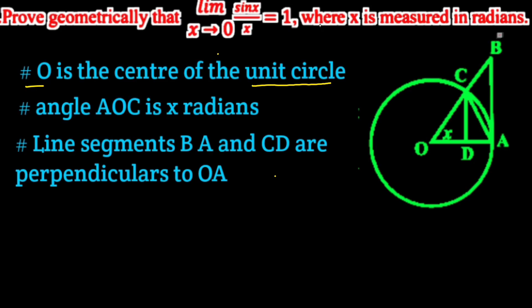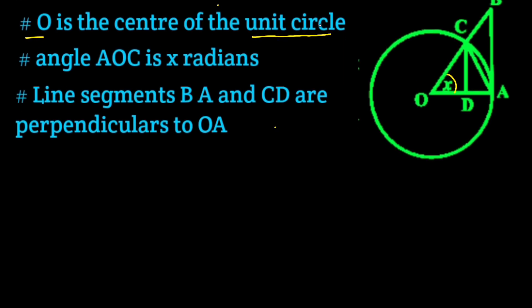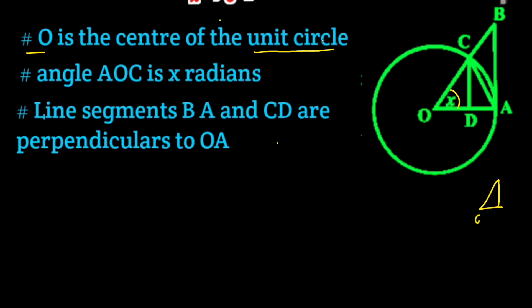If angle AOC is x radians, then within the unit circle the angle AOC is x radians. We draw line segments OA, AC, and join AC. We also draw line segment OAB with a perpendicular, constructing the relevant triangles.